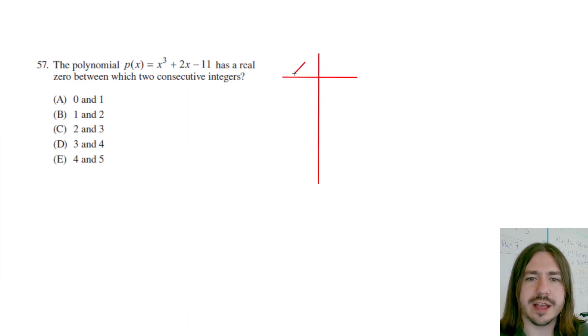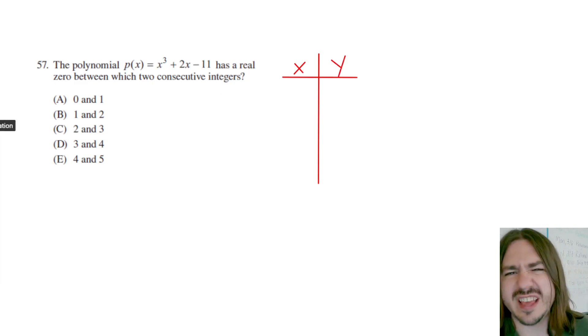We don't really care exactly what the zero is, and just to kind of refresh you, a zero is where the graph crosses the x-axis. In other words, it's the x-intercept.